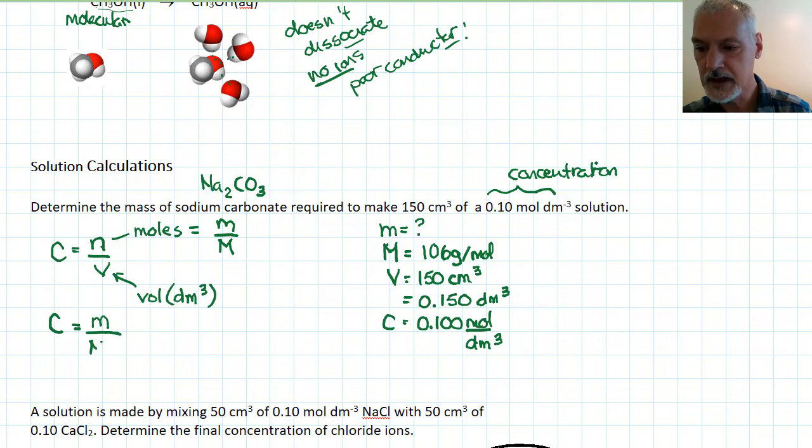And if I want to find the mass of chemical by itself, rearranging this further gives me: the mass of chemical will be concentration times volume times molar mass.